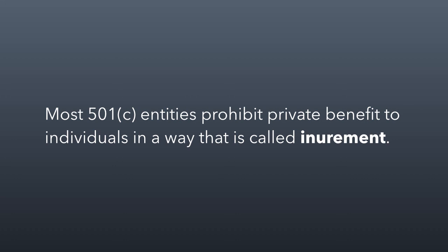One thing that's generally true for all 501c entities is that there's a prohibition on something called private benefit to individuals — in a way that's often called inurement. It's specifically defined in the tax code, and we're going to be getting to it in a later class session. We'll talk about all the ways that people improperly can benefit from nonprofit or tax-exempt resources. For now, it's important to understand that if you're going to be a 501c, you are limited by this concept of inurement, meaning you can't let private people benefit in non-tax-exempt ways.